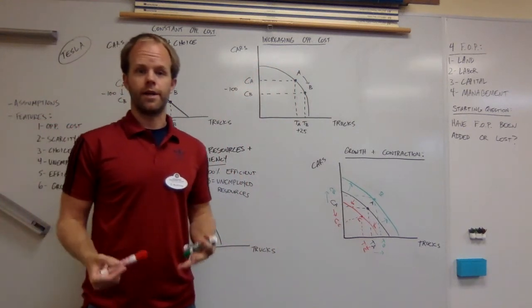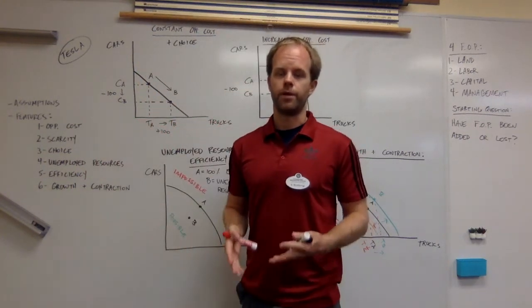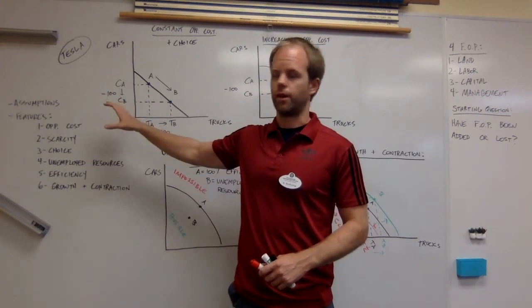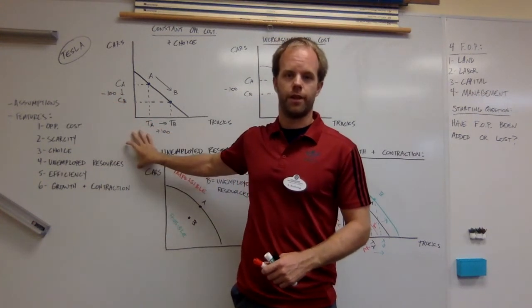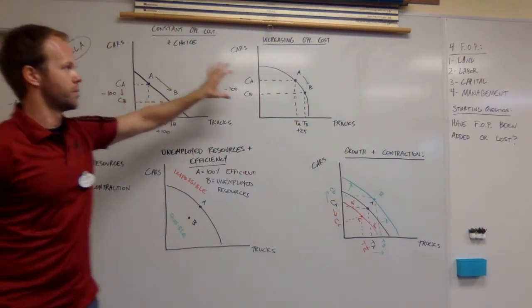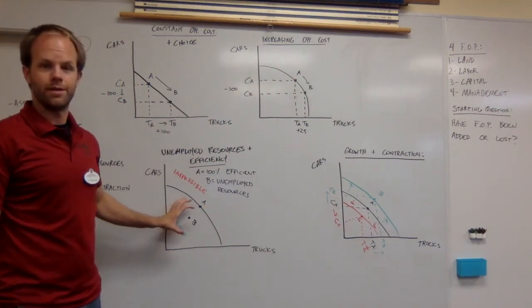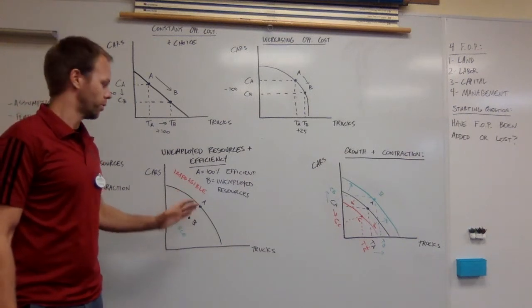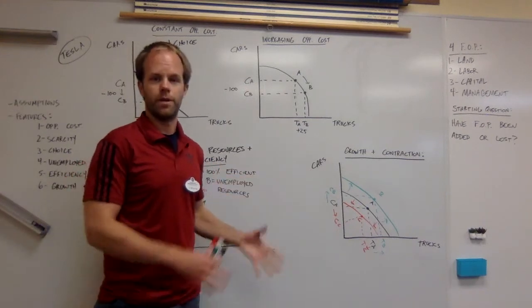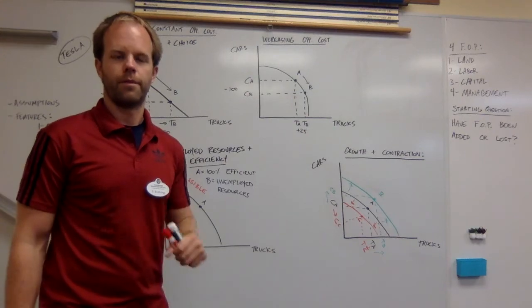This is the starter diagram in IB economics. It's a pretty simple model, but we can do a lot of different things with it. We just need to keep in mind what the assumptions are and the different features that it can do. We can show constant opportunity cost, increasing opportunity cost, whether a business is making as much as they can or have unemployed factors of production, and whether a business is making more or making less. Thank you, guys.